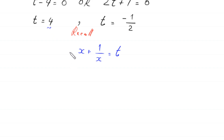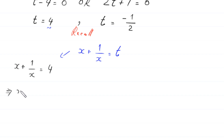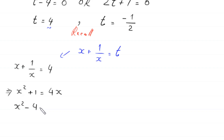Recalling that t equals x plus 1 over x: when t equals 4, the equation becomes x plus 1 over x equals 4. Multiplying both sides by x gives x squared plus 1 equals 4x. Moving 4x to the left gives x squared minus 4x plus 1 equals 0. This quadratic is not factorable, so we use the quadratic formula.